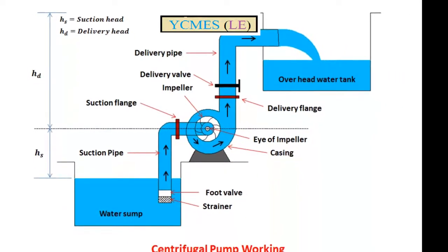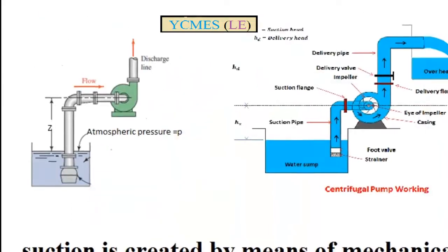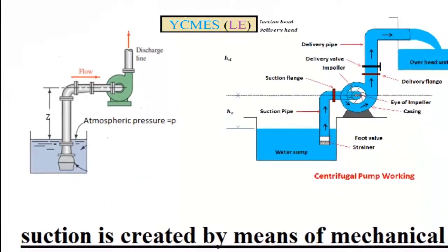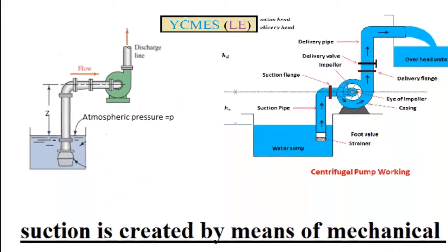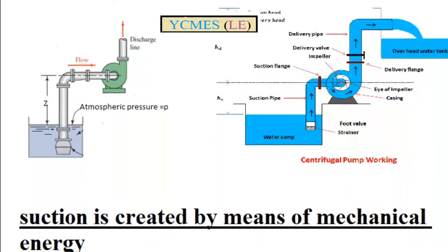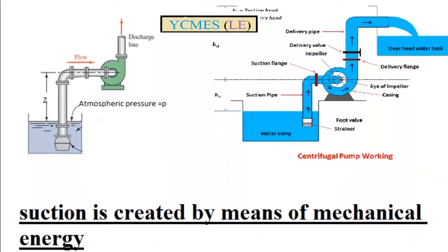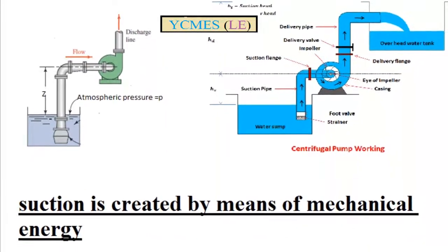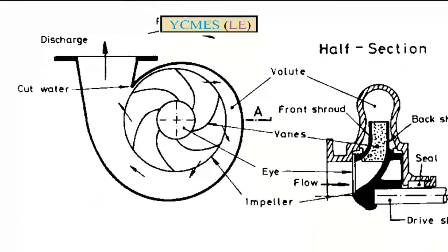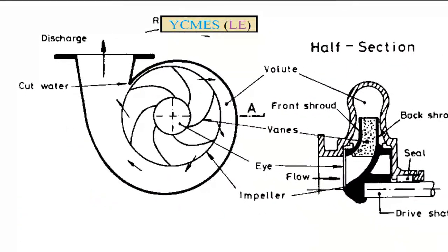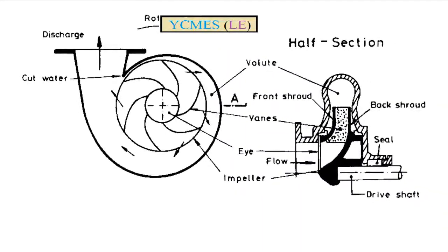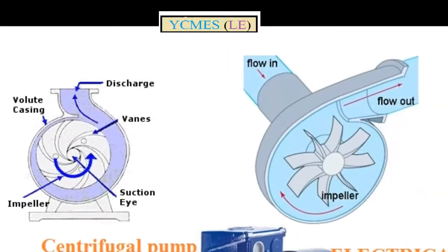How does a pump work? At the inlet, suction is created. How is this suction created? It is created by means of mechanical action. For example, in a centrifugal pump, there is an impeller, and this is driven by an electrical motor.